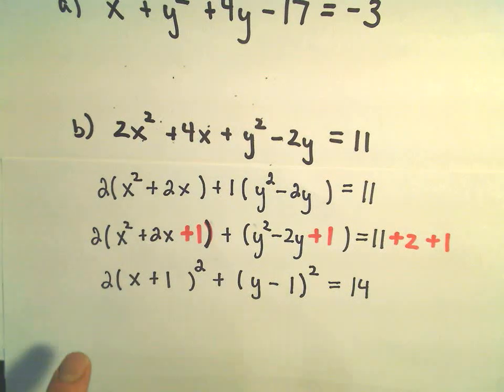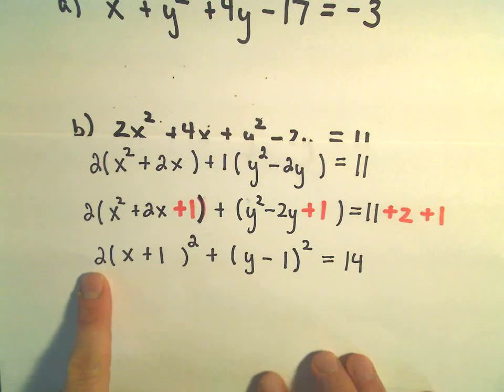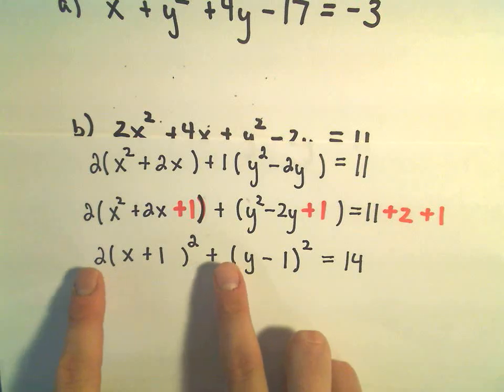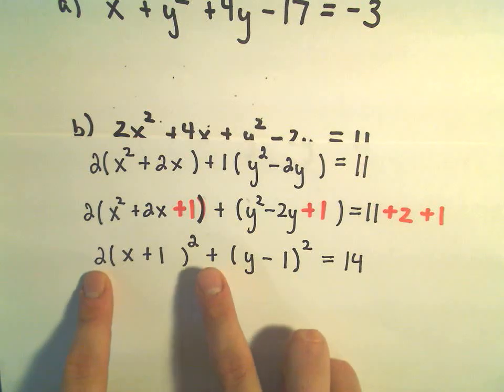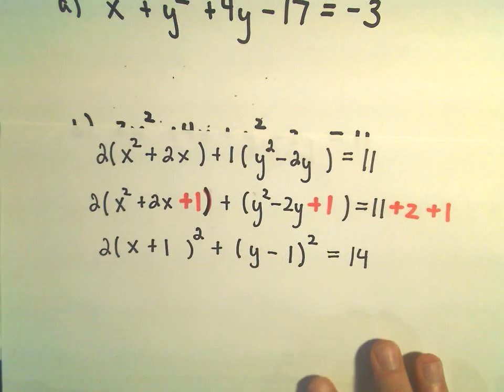If the coefficients, notice the coefficient on our x squared stuff is a 2. The coefficient on the y squared stuff is a 1. If the coefficients are different and there's a plus in between, you're basically going to be getting an ellipse is what's going to happen.